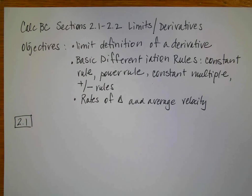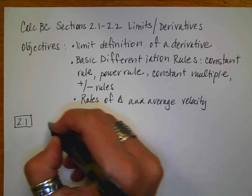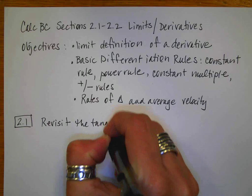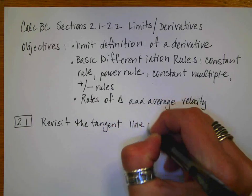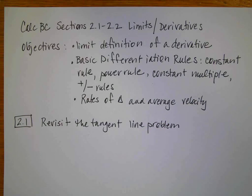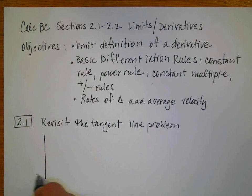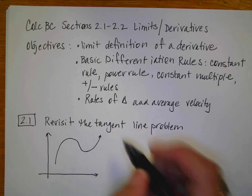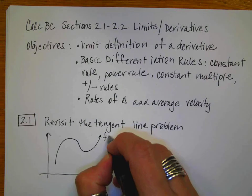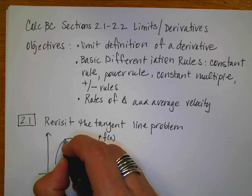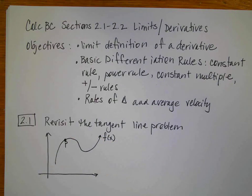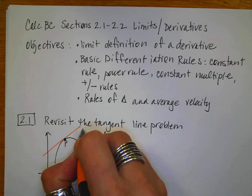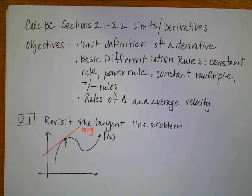I know you're brilliant and remember this stuff, but we're going to go back over it just in case. The first thing I want to do is revisit the tangent line problem. Here we're going to have a curve of some random function in terms of x, and I'm going to have a point on that function and want to find the tangent line through that point.